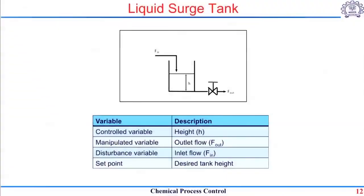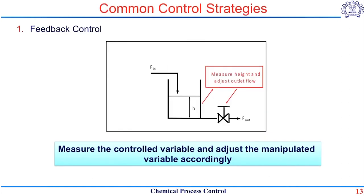We will now try to look at what are the different strategies in which we can control the level inside this tank when there is some disturbance in the inlet flow rate.